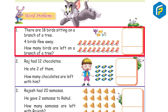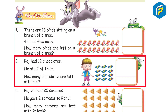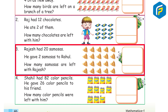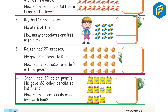Word problems: 1. There are 18 birds sitting on a branch of a tree; 4 birds flew away. How many birds are left? 2. Raj had some chocolates; he ate 2 of them. How many chocolates are left? 3. Rajesh had 20 samosas; he gave 2 samosas to Rahul. How many samosas are left with Rajesh?